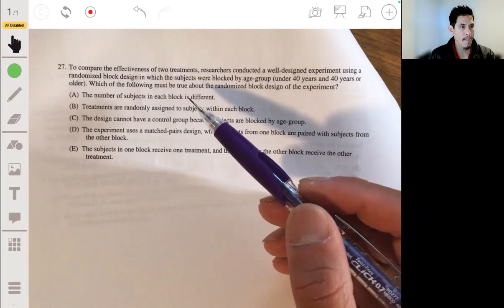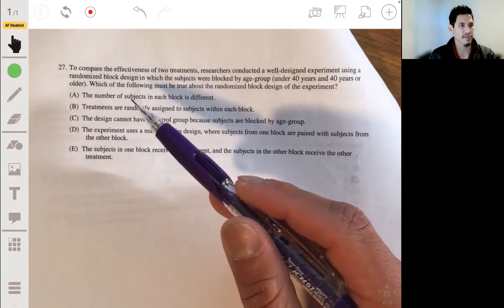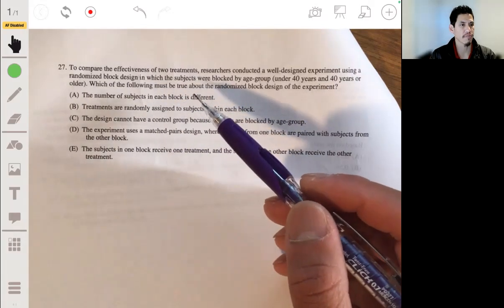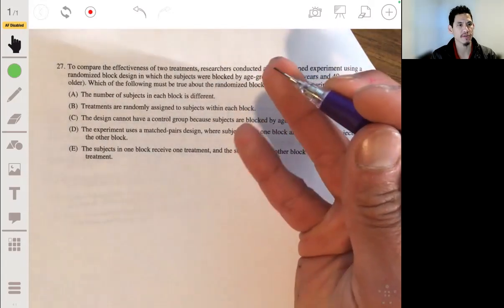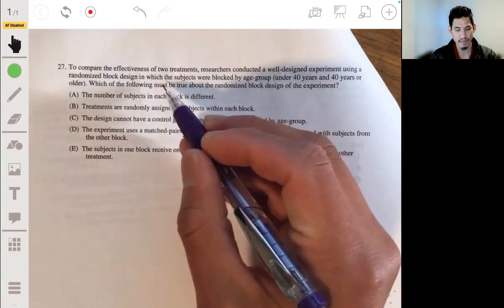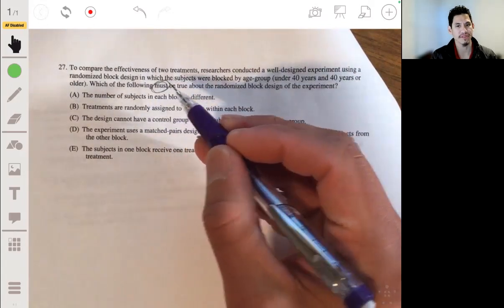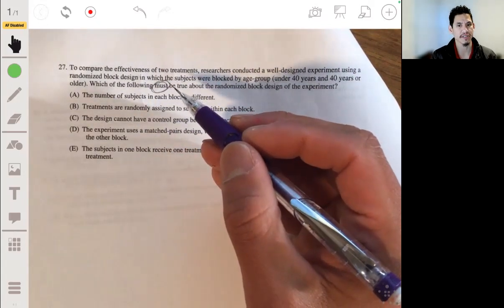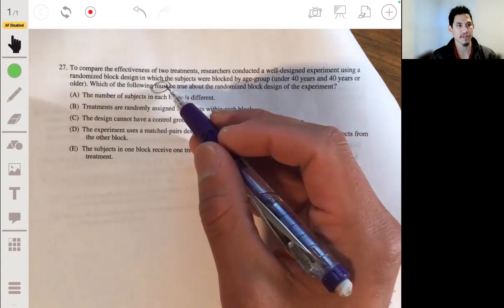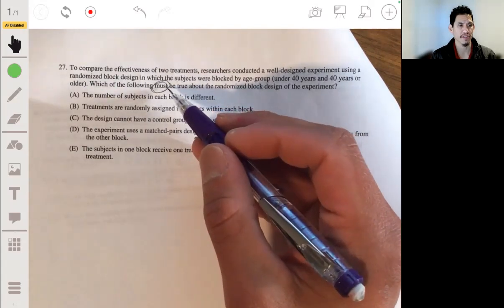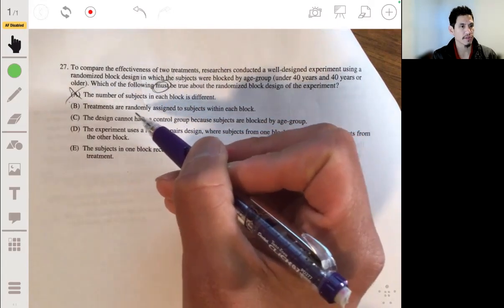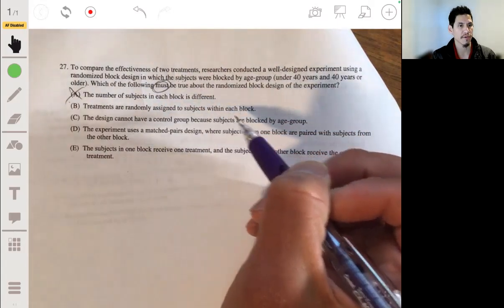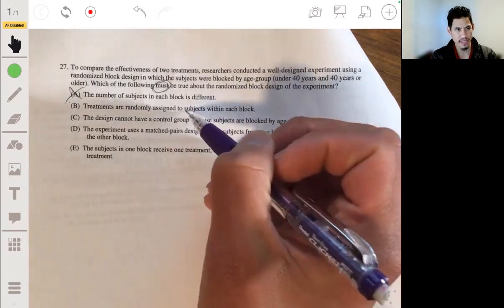So here we got the number of subjects in each block is different. Now it just must be true. It doesn't have to be true. This can happen sometimes. It's based on just the number of people you get in the study, but this doesn't have to be true. It's actually better if they were the same, but it's not going to be A. B. Treatments are randomly assigned to subjects within each block. Yeah, so this is what you want.